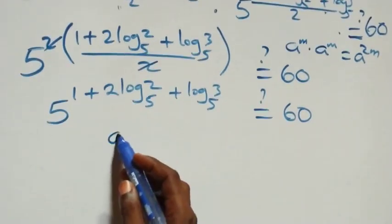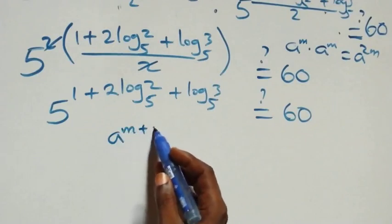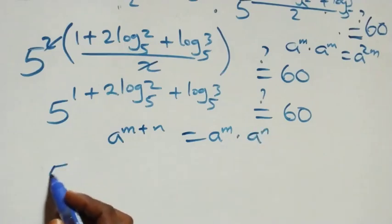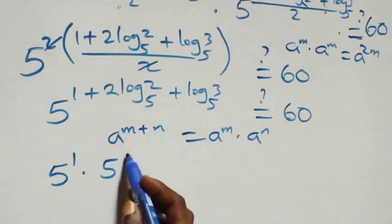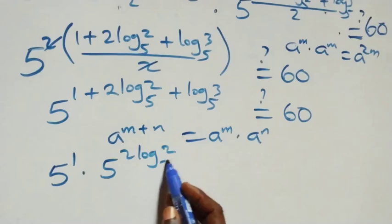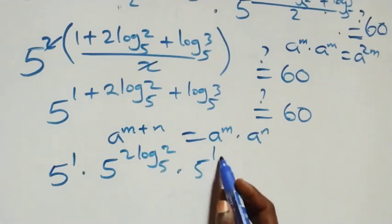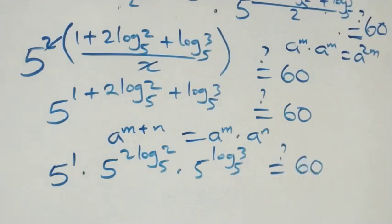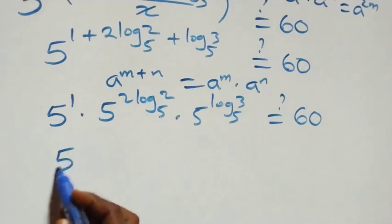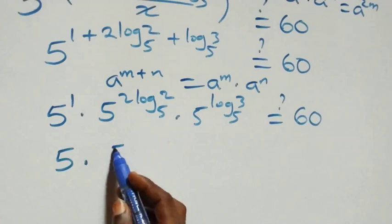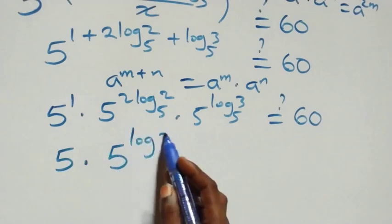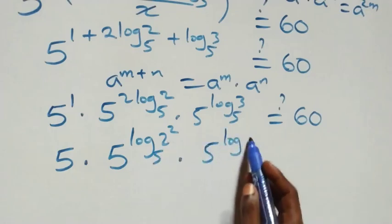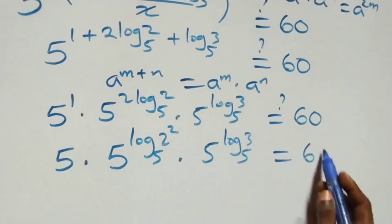We separate this using the law of indices: a raised to power m plus n equals a raised to power m times a raised to power n. So we have 5 raised to power 1, times 5 raised to power 2 log₅2, times 5 raised to power log₅3. This becomes 5 times 5 raised to power 2 log₅2, times 5 raised to power log₅3. Moving the 2 from the coefficient back into the power gives 5 times 5 raised to power log₅(2²), times 5 raised to power log₅3. Is this equal to 60?